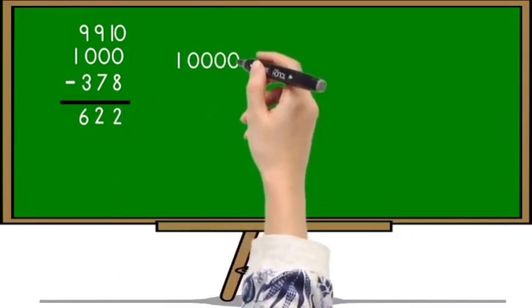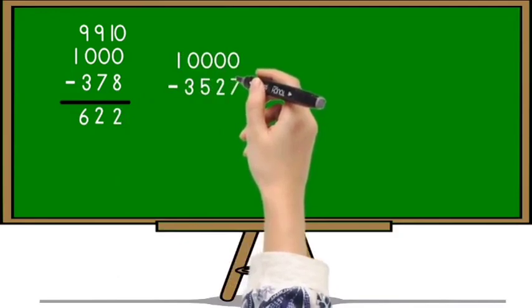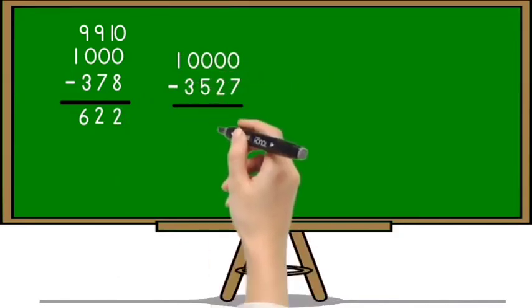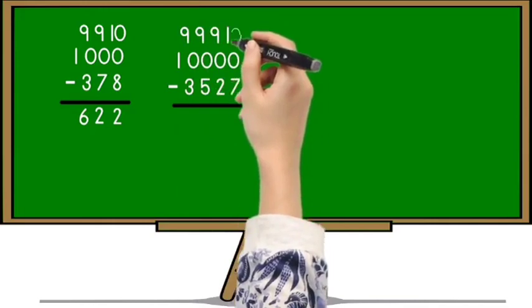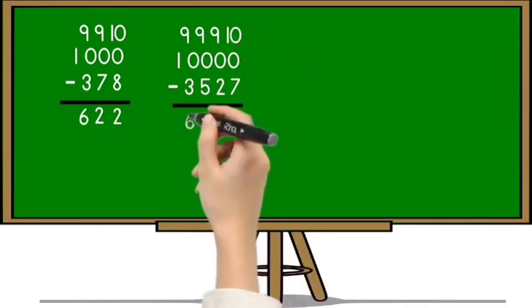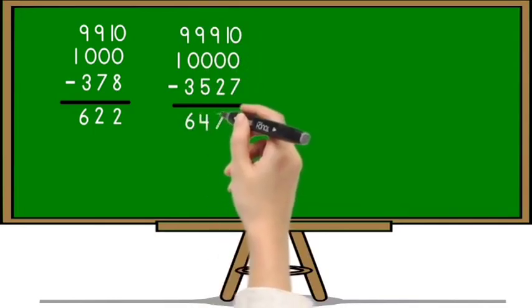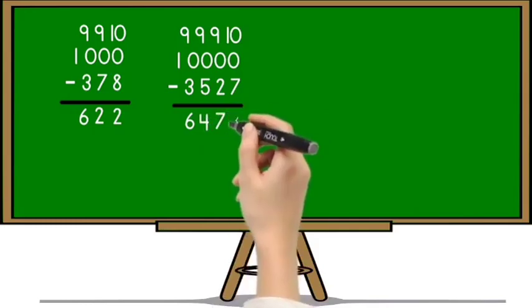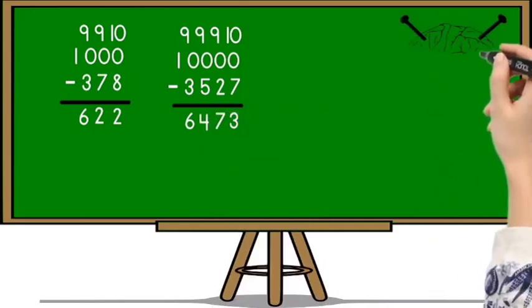Next example is 10000 minus 3527. 3527 is a four digit number. According to the concept, first three digits 3, 5, 2 we subtract from 9 and the last digit 7 from 10. So 9 minus 3 is 6, 9 minus 5 is 4, 9 minus 2 is 7, and 10 minus 7 is 3. So the answer is 6473.